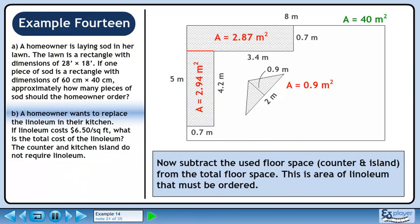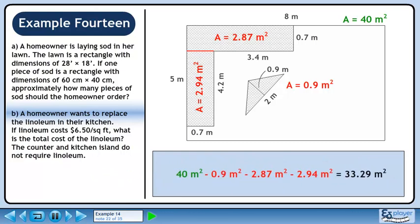Now subtract the used floor space, counter and island, from the total floor space. This is the area of linoleum that must be ordered. Starting with the total area in green, subtract all of the unneeded areas in red. This gives 33.29 square meters.